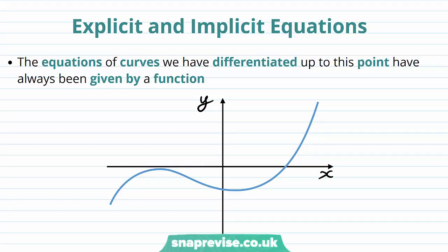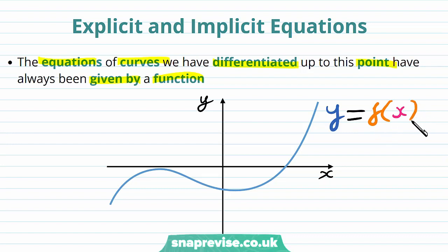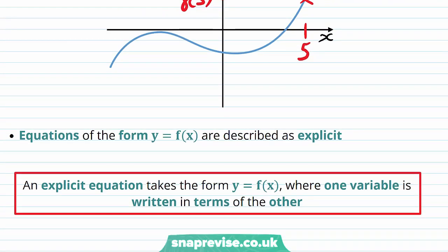So what exactly are explicit and implicit equations? The equations of curves that we have differentiated up to this point have always been given by a function. We've always had the curves in the form y equals some function of x, and if we pick a point on the curve where x equals 5, the y value is given by f(5). Equations of the form y equals f(x) are described as explicit — one variable is written in terms of the other.